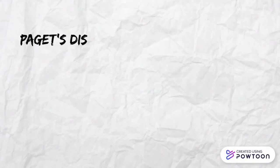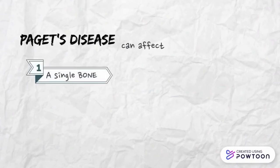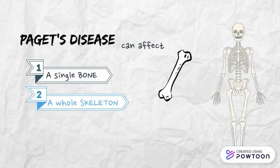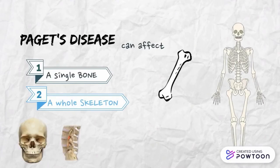Paget's disease can affect a single bone or the whole skeleton. The bones most often involved are the skull, lumbar vertebrae, pelvis, and femur.